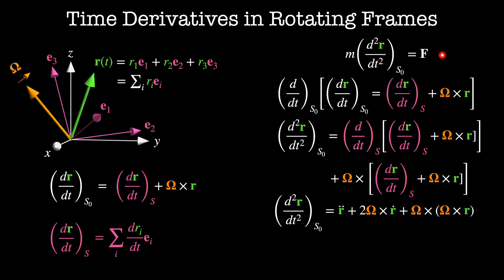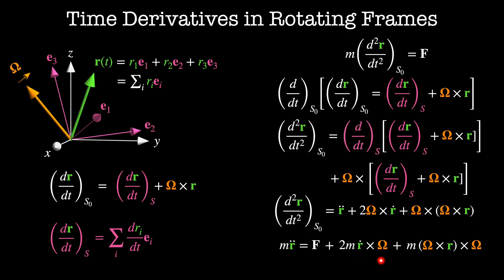Substituting the definition of force into this equation, in the rotating frame m times r double dot equals the force in the inertial frame plus 2m times r dot cross omega plus m times omega cross r cross omega. Note that the signs are adjusted by switching the order of the cross product terms. The term 2 times r dot cross omega is called the Coriolis force, and m times omega cross r cross omega is called the centrifugal force. In the rotating frame, in addition to f, there are two fictitious forces acting on the particle.